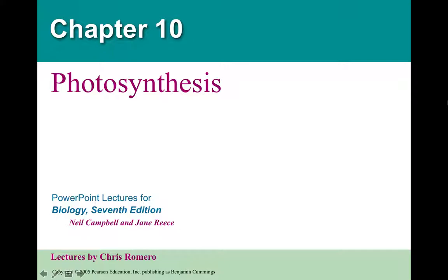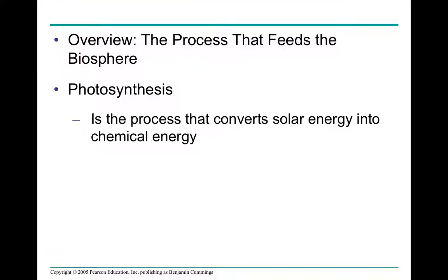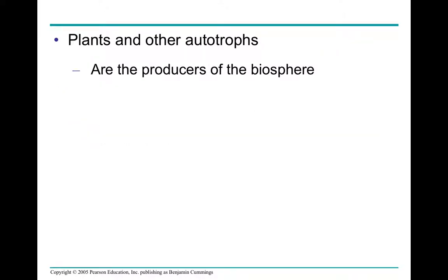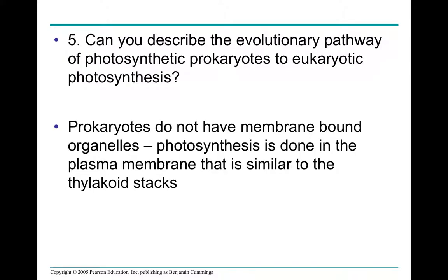For this lesson on photosynthesis, I'm using a PowerPoint from the book because they have a lot of really great visuals. I've added in some questions, but pretty much all of the questions for this learning target on photosynthesis are covered in the presentation, with one extra added at the front and at the end. Photosynthesis is a process that converts solar energy into chemical energy. Plants and other autotrophs are the producers of the biosphere.